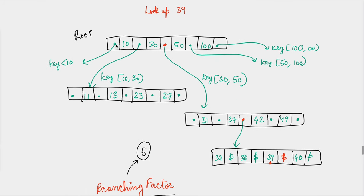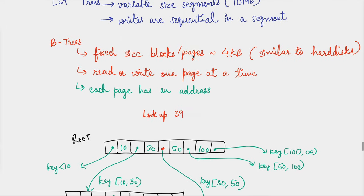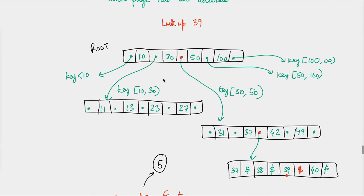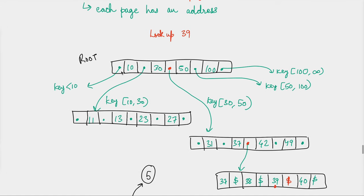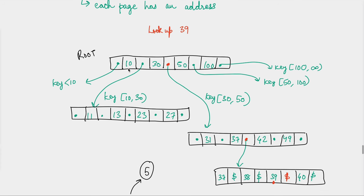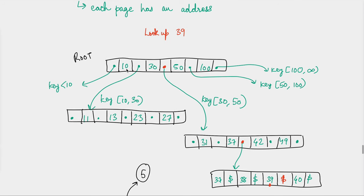The root page is a page with an address — this is not an in-memory database. B-trees have a lot of branches from every node, and every node is a page residing in physical memory — the hard disk, not just RAM. The root node can have many children, and the keys are stored in ascending order. For example, the root node might have keys 10, 30, 50, and 100.